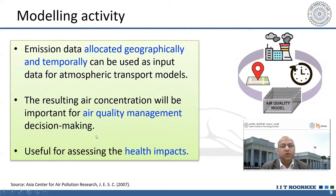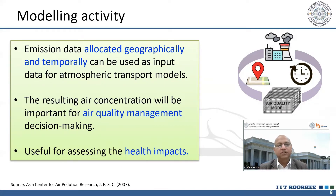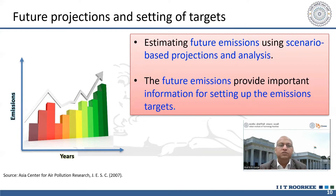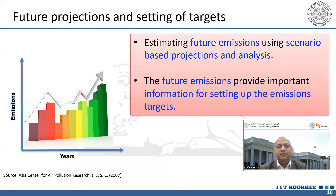For modeling activity, any air quality model or health risk assessment model requires emissions as a key feature. Without emissions, you cannot estimate concentration or health effects. For future projections, you can estimate what will happen under different scenarios. Please keep attention on the examples and illustrations — focus on what emission inventory and air pollution control and mitigation activities are about, and then relate with the theoretical knowledge.